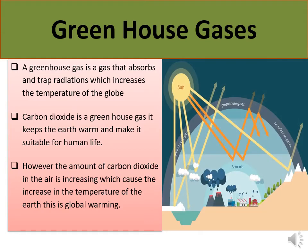A greenhouse gas is a gas that absorbs and traps radiation, which increases the temperature of the globe. Carbon dioxide is a greenhouse gas — it keeps the earth warm and makes it suitable for human life. However, the amount of carbon dioxide in the air is increasing, which causes an increase in the temperature of the earth. This is global warming.